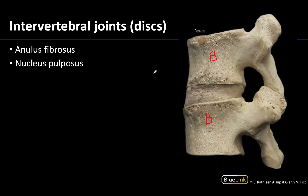Recall these are a type of symphysis, meaning that they are cartilaginous joints. You'll have articular cartilage on the ends of the bone, and then you will have what we typically think of as the intervertebral disc in between. This will be composed of two layers.